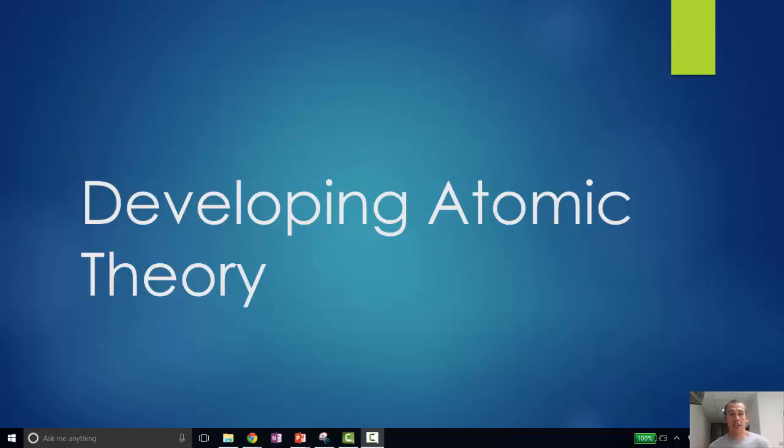In this lesson we're going to take a look at the major developments or steps that took place in developing modern atomic theory. We've got to go from John Dalton who said atoms are the smallest things all the way to the nuclear model that we have today.